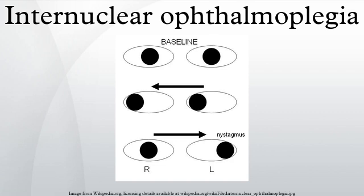In older patients with one-sided lesions, a stroke is a distinct possibility. Other causes are also possible.